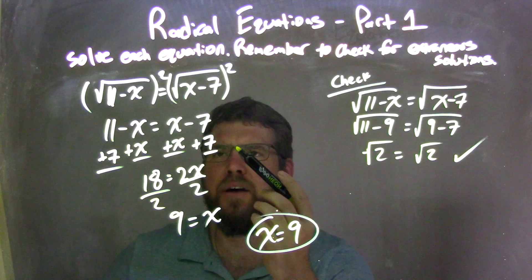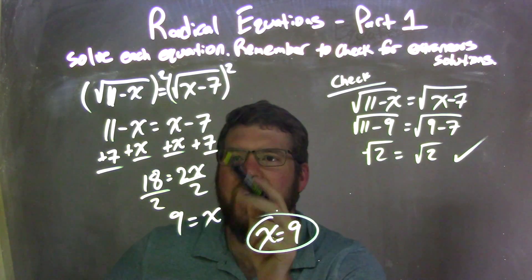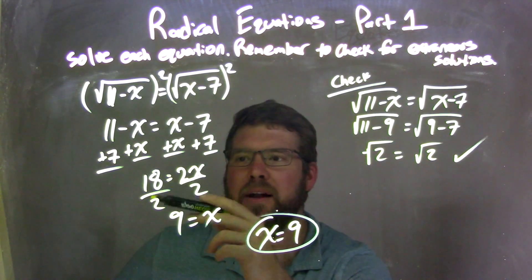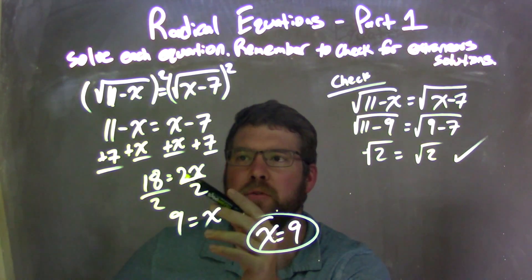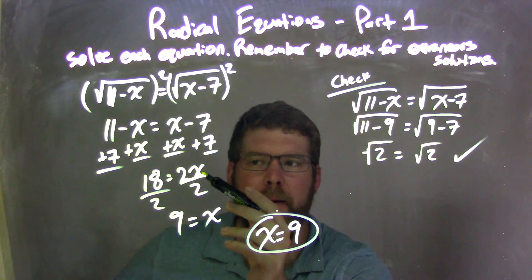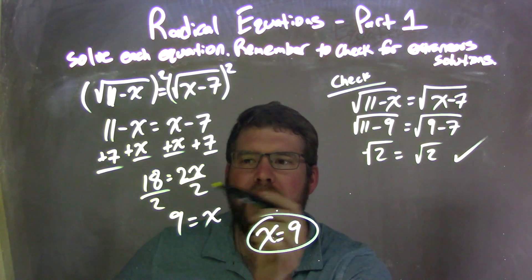Simplify that now and solve for x. I added x to both sides and added a 7 to both sides, eliminating some parts. Leaving me with 18 equals 2x on the right. Divide both sides by 2. Leaving me with 18 divided by 2 is 9 equals x on the right.